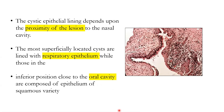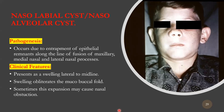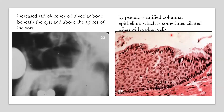The nasolabial cyst results from entrapment of epithelial remnants along the fusion of the maxillary, medial nasal, and lateral nasal processes. It presents as a swelling lateral to the midline, obliterates the mucolabial fold, and can sometimes cause nasal obstruction. Radiolucency is seen in association with the apices of the incisors. Histologically, it shows pseudostratified columnar epithelium, which may be ciliated with goblet cells — goblet cells are so named for their goblet shape and are mucus-secreting cells.